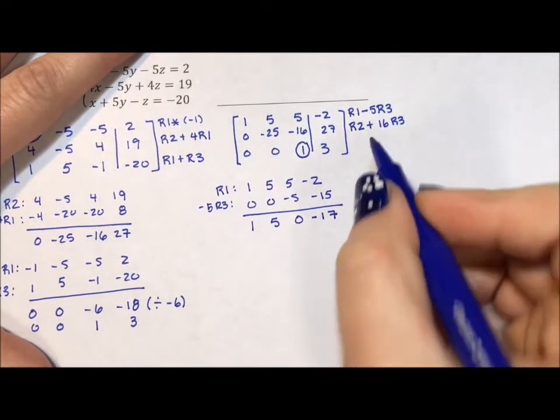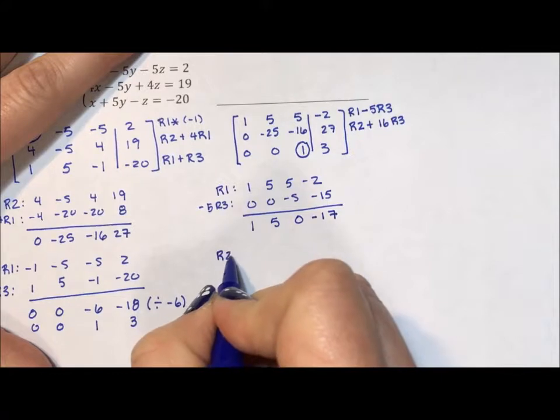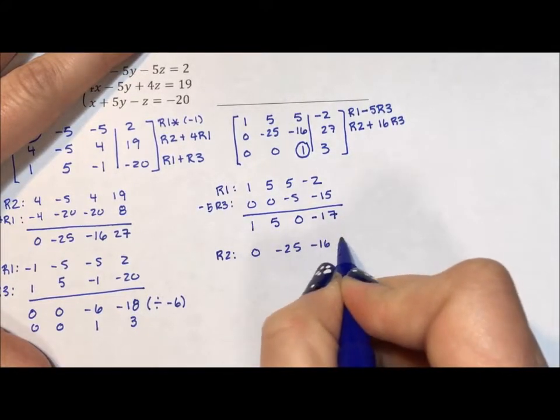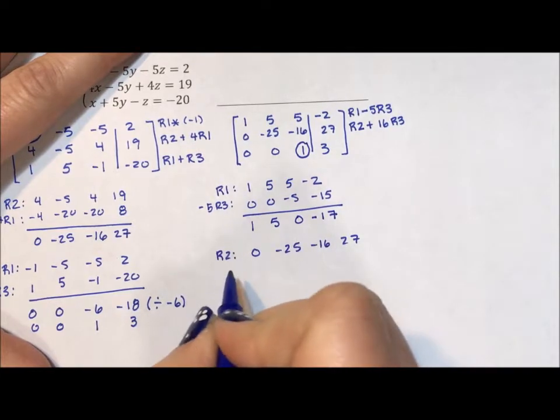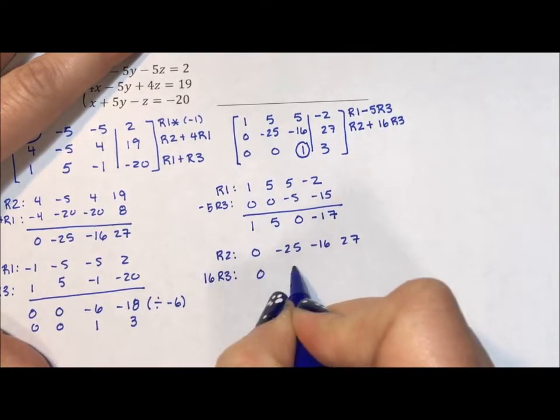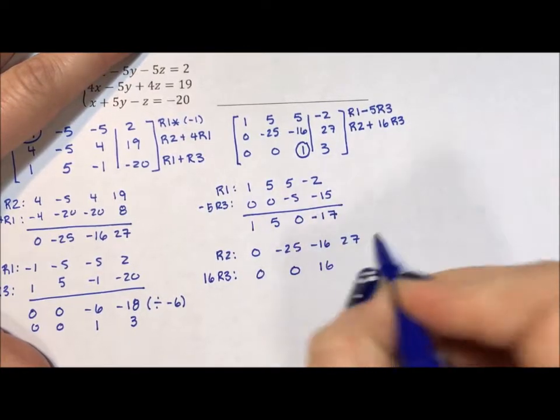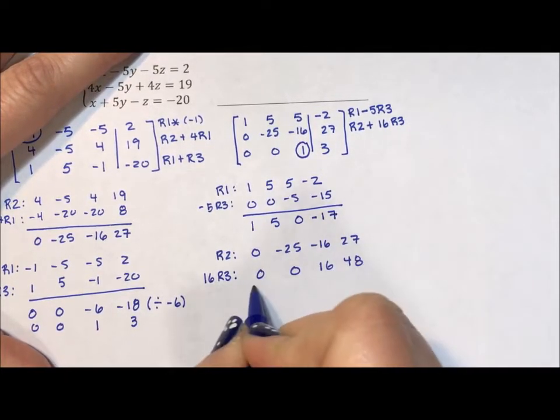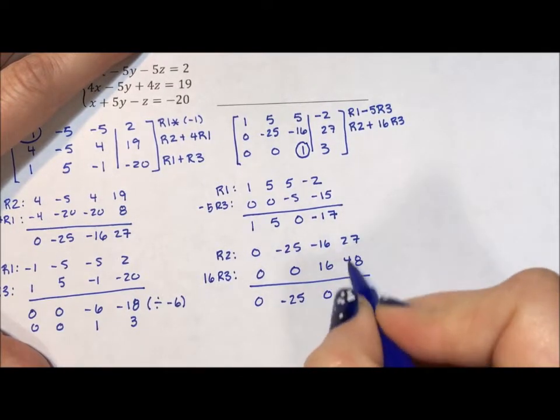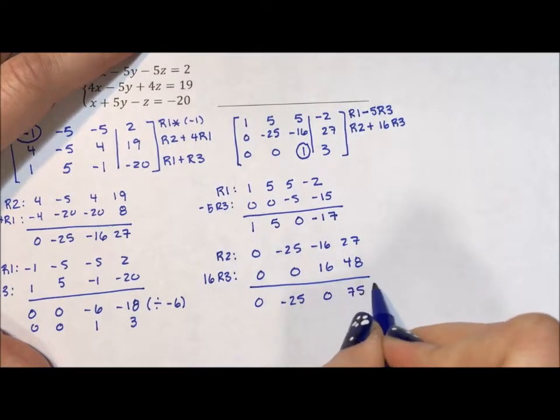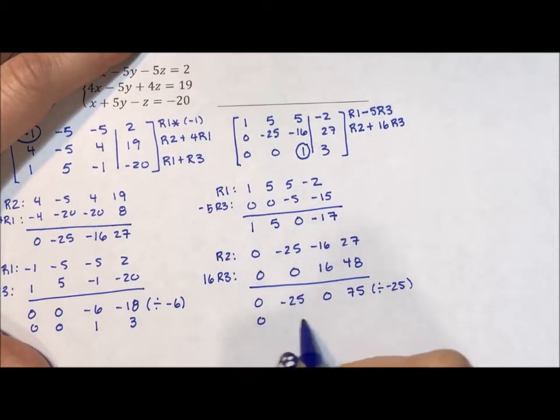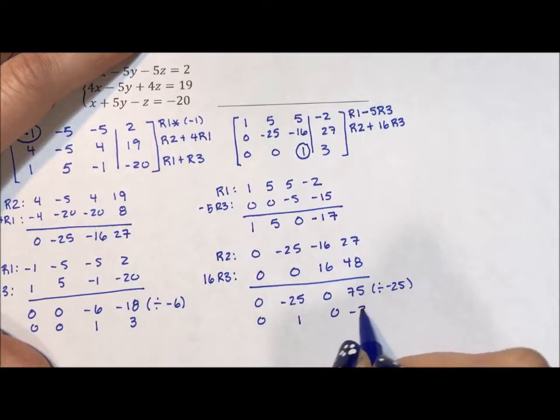Then I'm going to take row 2, which is 0, -25, -16, 27. And I'm going to add 16 row 3s, which is 0, 0, 16. Let's see, 16 times 3 is 48. And when I add down, I'm going to get 0, -25, 0, 75. I can divide by -25 to turn this into 0, 1, 0, -3.